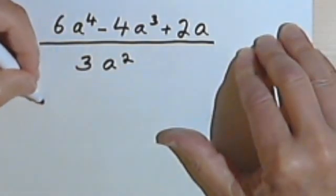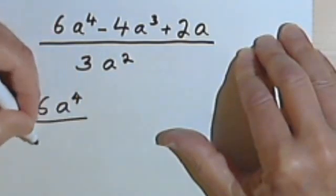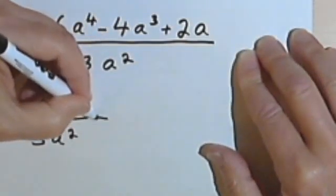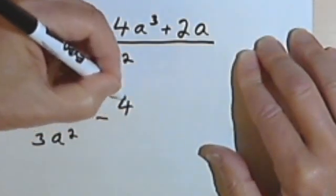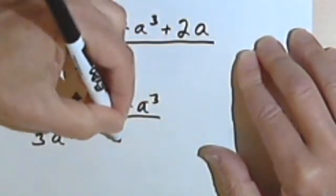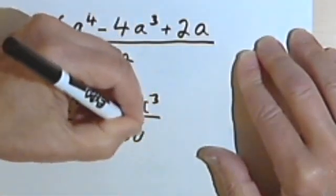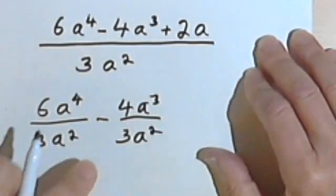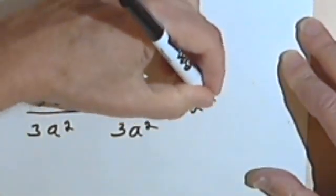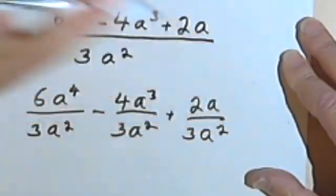So I'll take the 6a⁴, divide that by 3a², and then I've got a minus sign, so it'll be minus 4a³ over 3a². So the denominators are always going to be the same in each of the fractions. And then I've got a 2a, and once again that's over 3a².